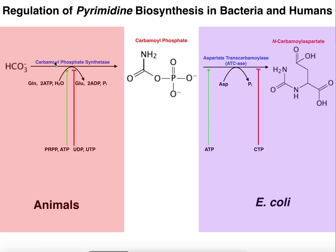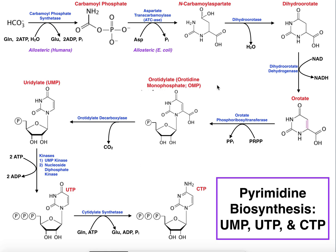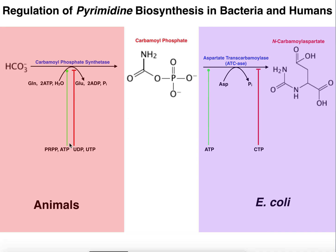How do we activate this enzyme, and what's the logic of it? Phosphoribosyl pyrophosphate, or PRPP, and ATP both activate this enzyme. For PRPP, it makes sense to activate this enzyme because if we have lots of PRPP present, that's the precursor to all nucleotides — whether pyrimidines or purines. So PRPP is going to activate carbamoyl phosphate synthetase.